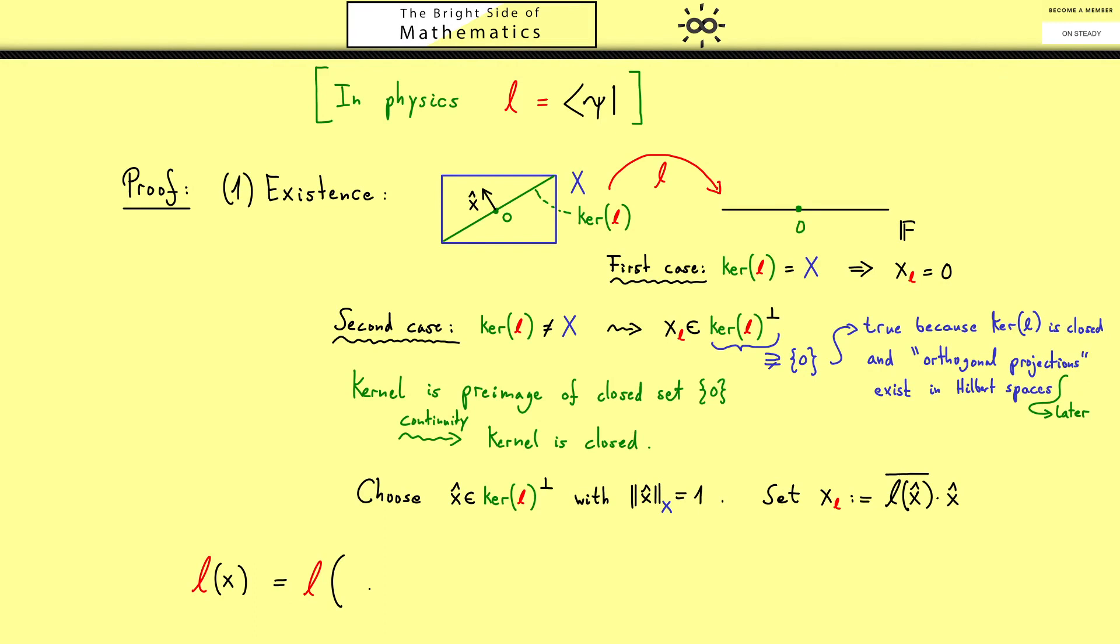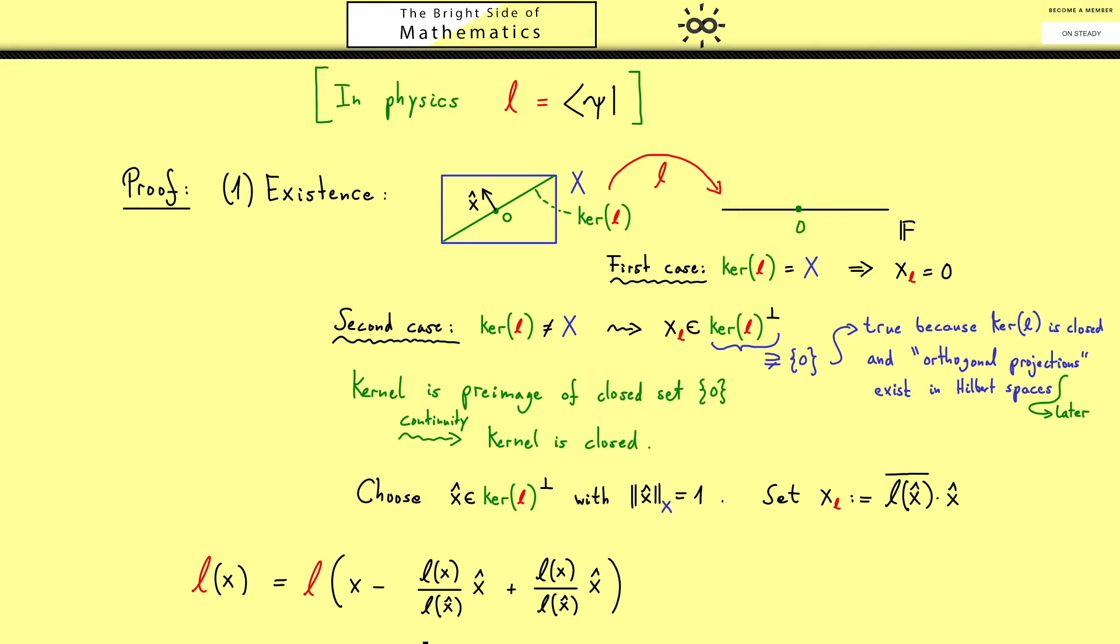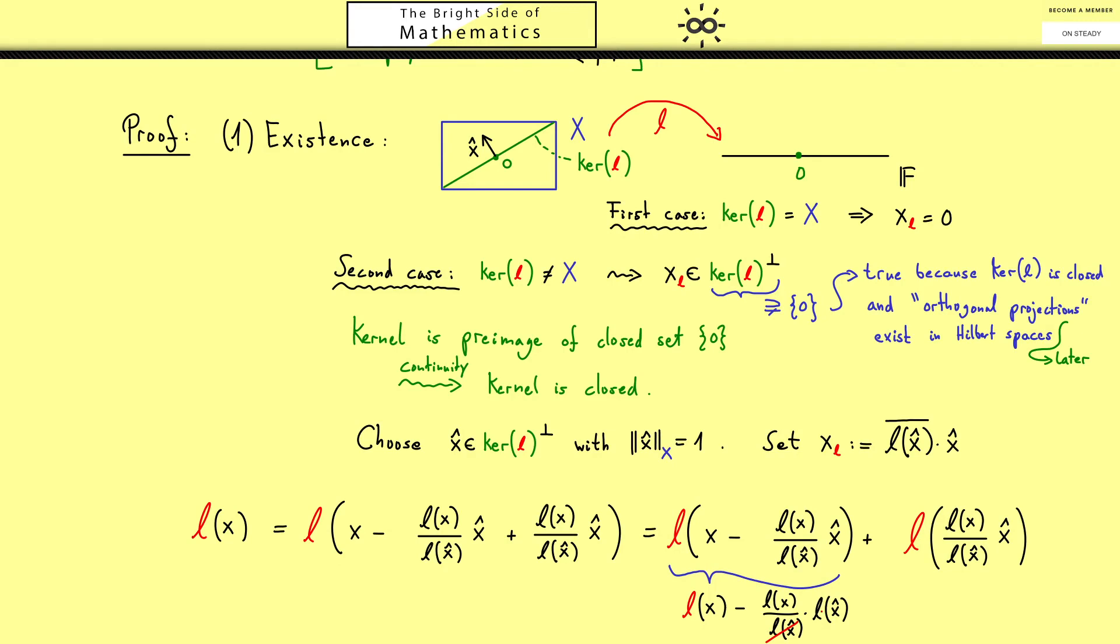Ok so let's start writing that down. For L of x we can rewrite the x by subtracting and adding again the component into the direction of x hat. Again this is the scaling factor in front of the x hat which is correctly chosen as we see in the next step. Using the linearity we can split it up into two terms. And now we look at the first one and see that we can use the linearity again. Now the term with the x hat will cancel out and then the whole term will vanish. This means that only the second term remains where we should abbreviate the scaling factor maybe with the name lambda.